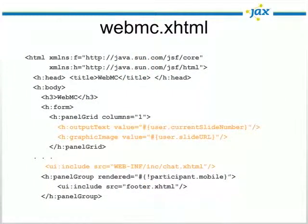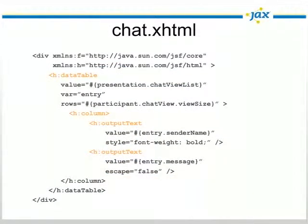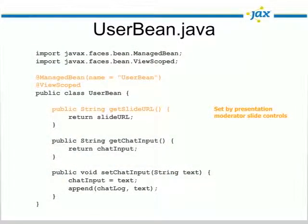We also illustrate some Facelets capabilities, such as including a chat page in the main page. Chat is built up of a data table with basically one column—the sender name and the actual message. There are no Ajax concerns in the page even though it's all dynamically updated via push. Because of the IceFaces rendering process, we just place the components on the page and bind them to the model through expression language. To create that dynamically updating slide, all we do is return the current slide URL. IceFaces detects the change and sends just that URL to the browser.